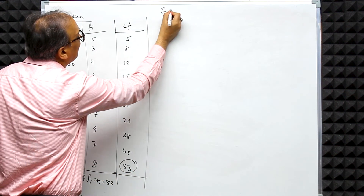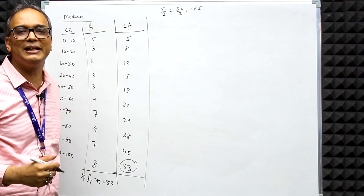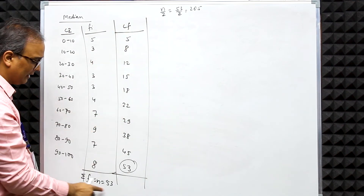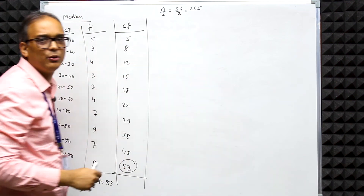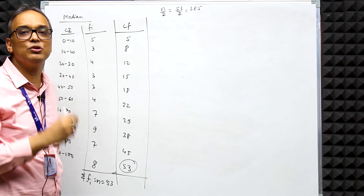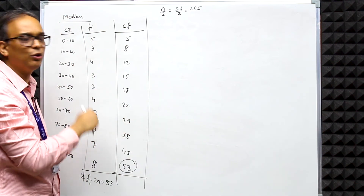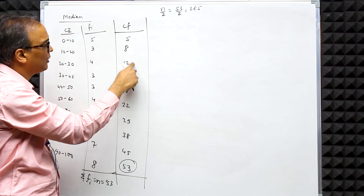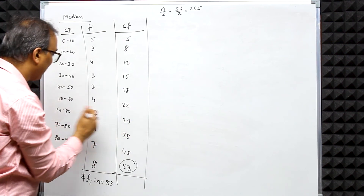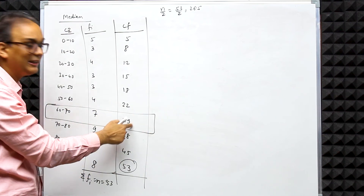The Median represents the middle-most data. First, calculate n/2 = 53/2 = 26.5. We need to find which class interval contains the 26.5th observation. Looking at the cumulative frequencies — 5, 8, 12, 15, 18, 22, 29 — the value 26.5 falls within the cumulative frequency range 22 to 29, which corresponds to the class interval 60–70. So 60–70 is our Median Class.